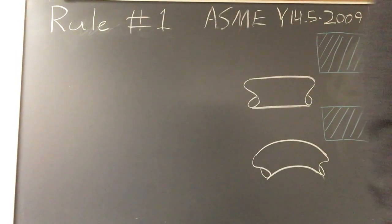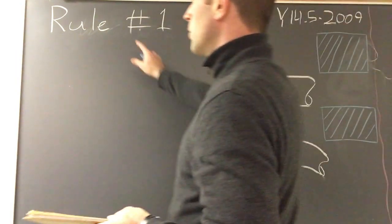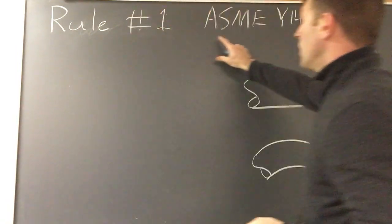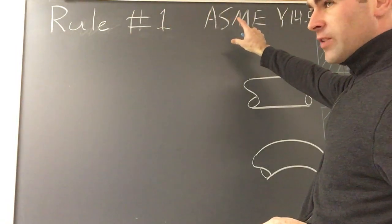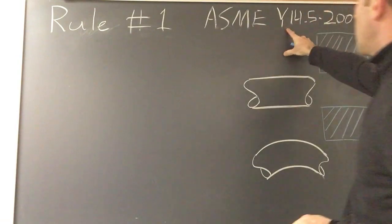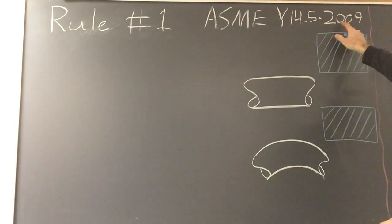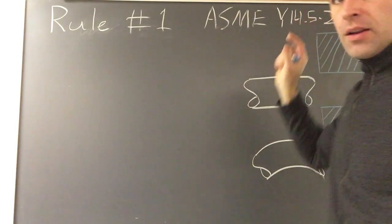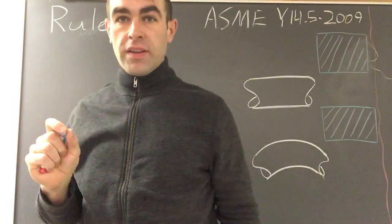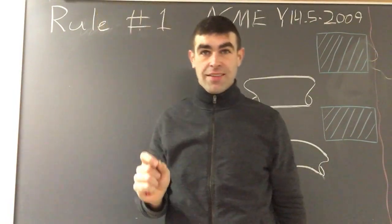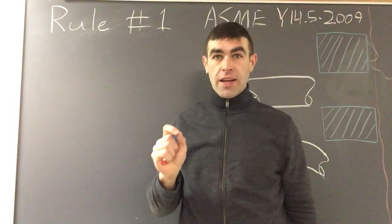Okay, tonight let's talk about rule number one of dimensioning and tolerancing standard ASME Y14.5-2009. What rule number one does is establish conditions that allow parts to fit every time.